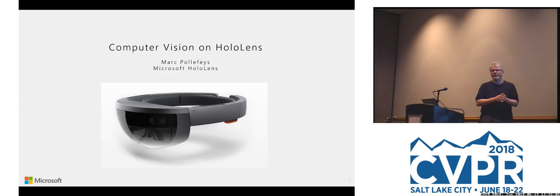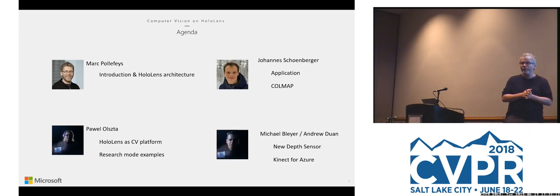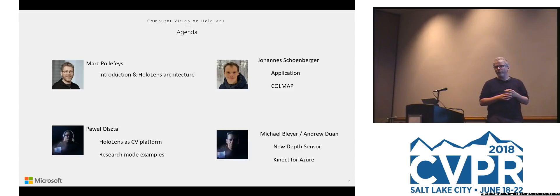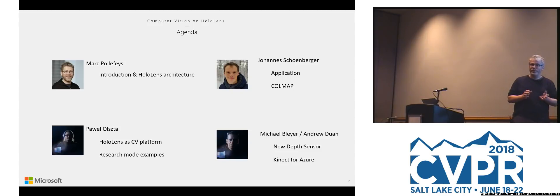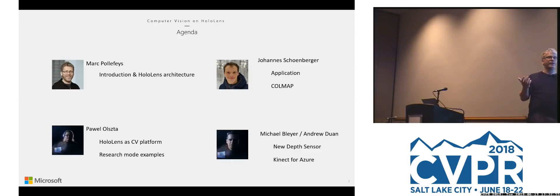Welcome everyone to this tutorial for HoloLens, and in particular for research mode. Here's roughly what we'll talk about: I'll first briefly introduce HoloLens and all the sensors inside it and what HoloLens was built for. Then the main part of the tutorial will be to discuss and introduce the new research mode of HoloLens, which makes all of the imaging sensors available to you as researchers. Normally these sensors are off-limits to applications except for the standard RGB camera, but if you switch your device into research mode you'll have access to all of the imaging sensors.